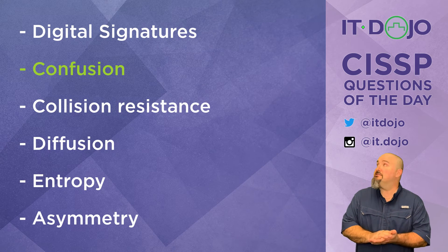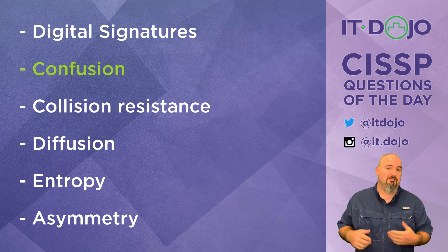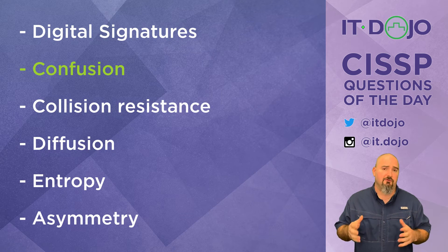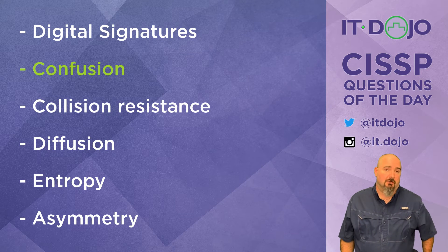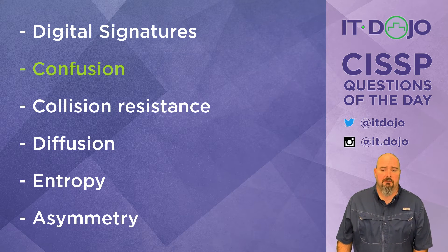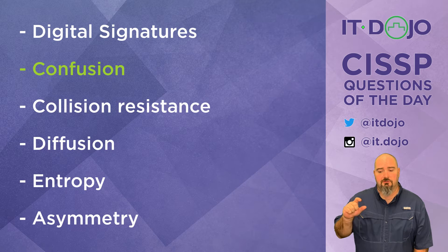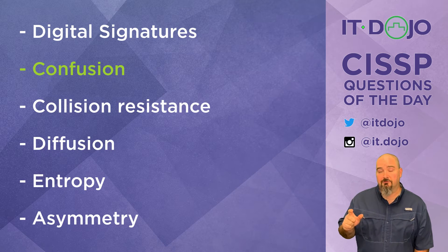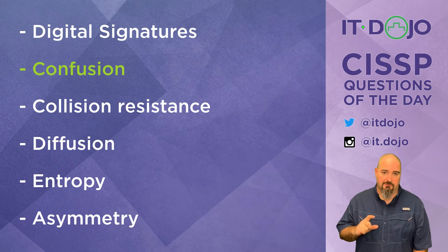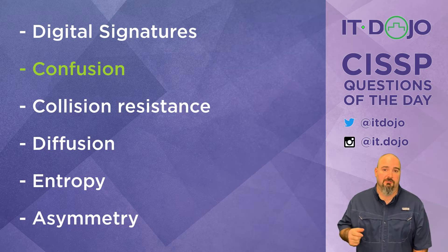The next answer choice is diffusion. Diffusion is not the correct answer. Although diffusion and confusion are oftentimes mentioned in the same breath, diffusion is a mechanism that can allow better security for block ciphers, but not for stream ciphers. Stream ciphers rely just on confusion in order to achieve their security.